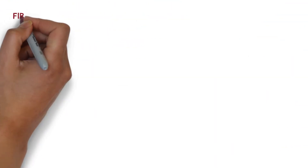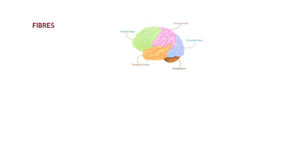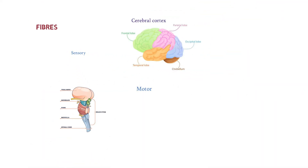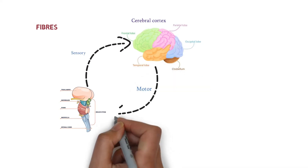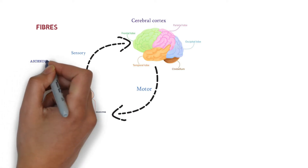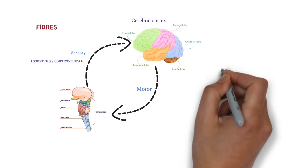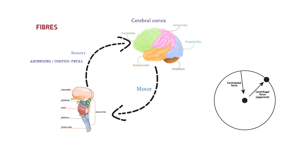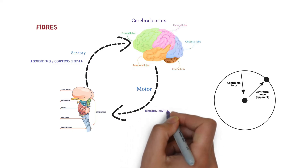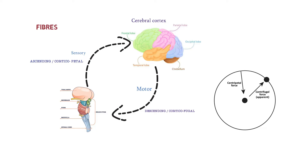Now let's discuss the most important topic — the fibers of the internal capsule. From the cerebral cortex to the brainstem and thalamus, we have two types of neurons: sensory neurons and motor neurons. Sensory fibers start from the thalamus and end at the cerebral cortex, while motor fibers start from the cerebral cortex and end at the brainstem and spinal cord. Sensory fibers are also called corticopetal fibers — toward the cortex — while motor neurons are called corticofugal fibers, going away from the cerebral cortex.